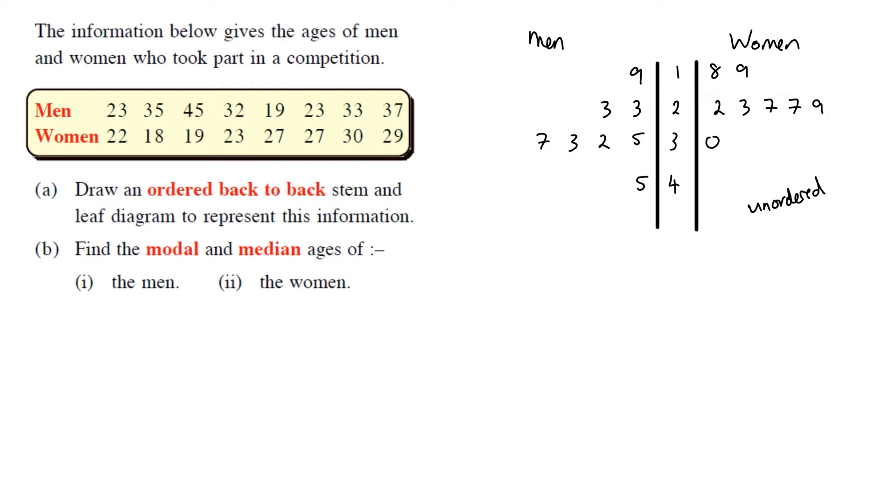What we're going to do is we're going to take that and then we're just going to quickly order it. So we're going to do the same kind of thing. So let's go one, two, three, four, men, women. And actually the women's readings were all in order. So eight and nine, two, three, seven, seven, nine, and zero. So they were all fine.